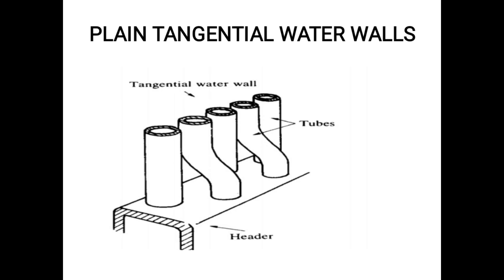Next is the tangential plain water wall, which is a subtype of plain water walls. The only difference is that the tubes are arranged in a tangential form to increase steam generation capacity. Some tubes are made tangential, so this is considered a type of plain water wall tube.